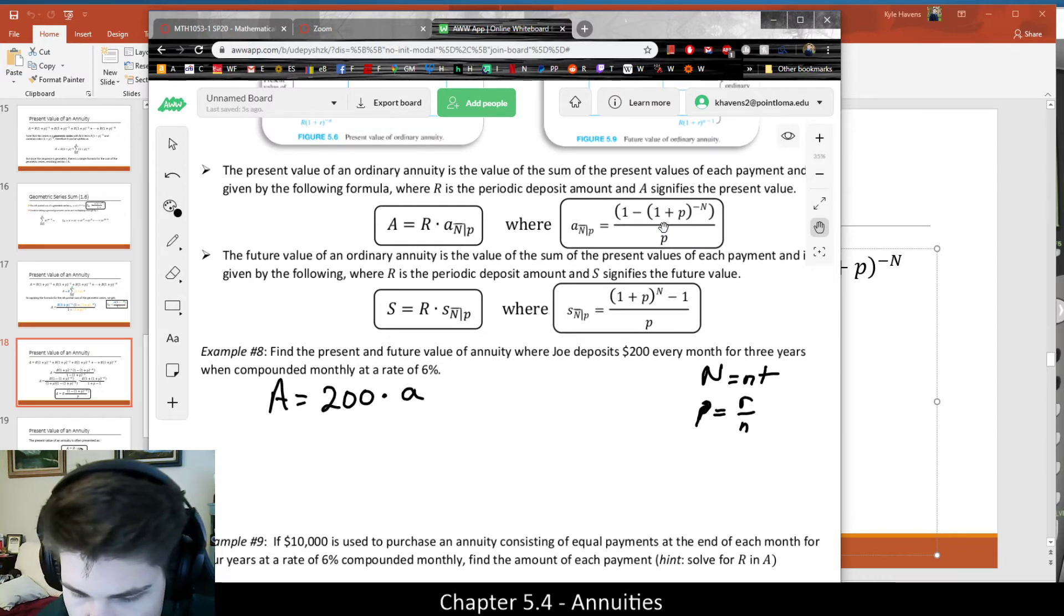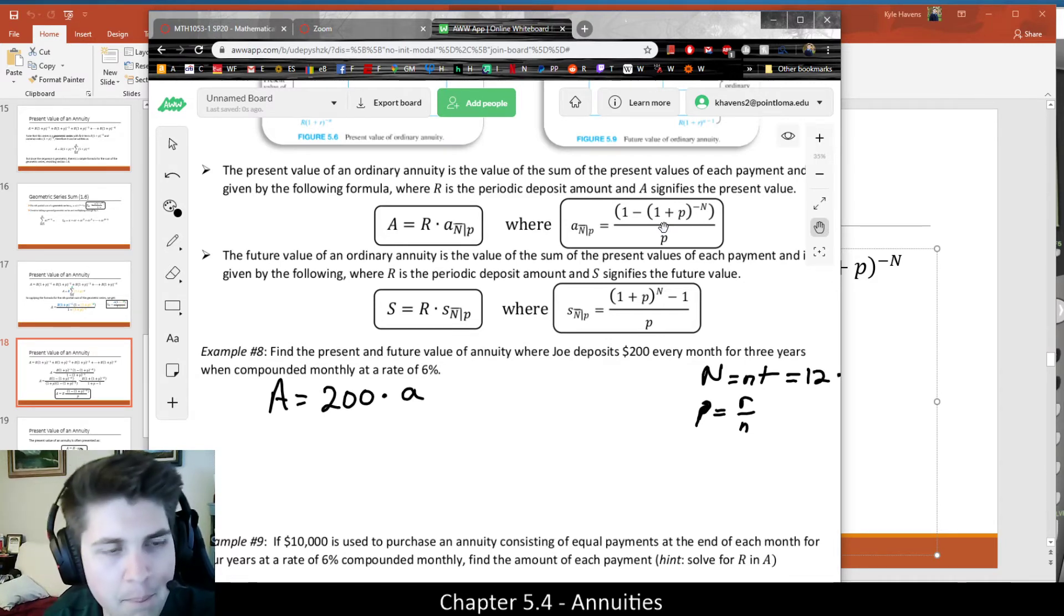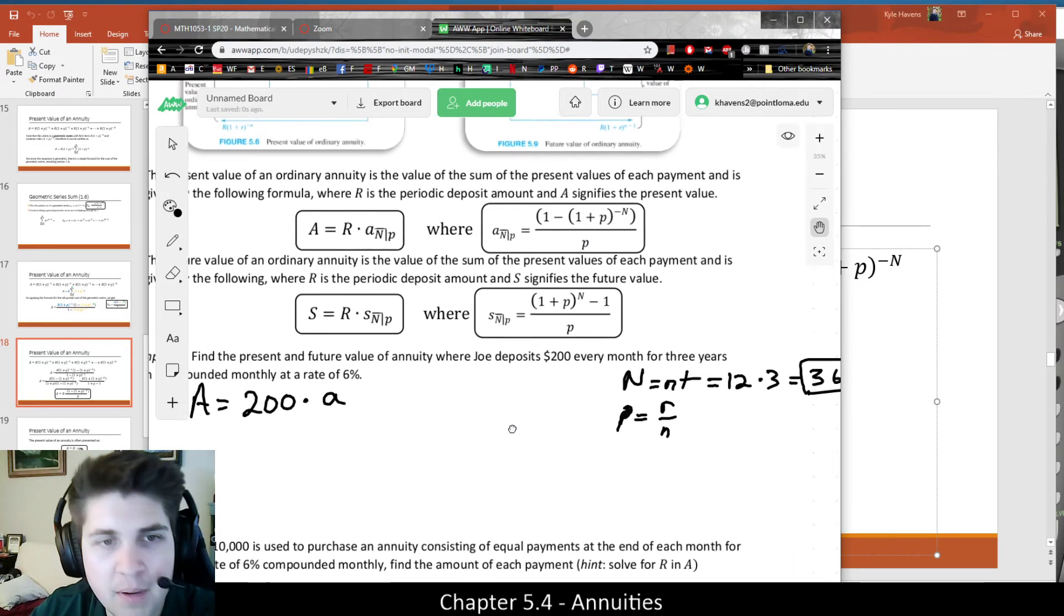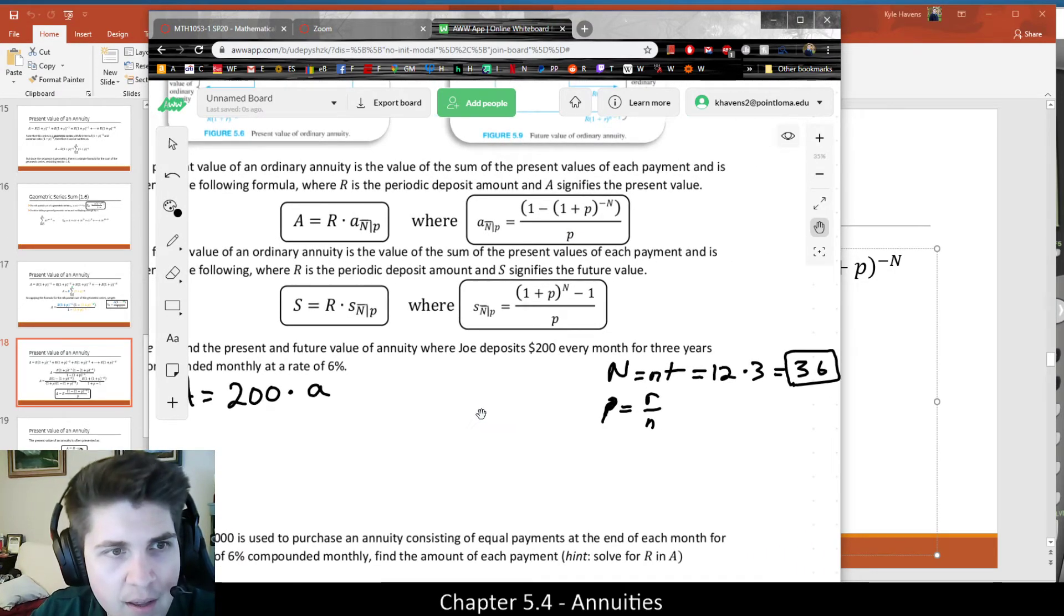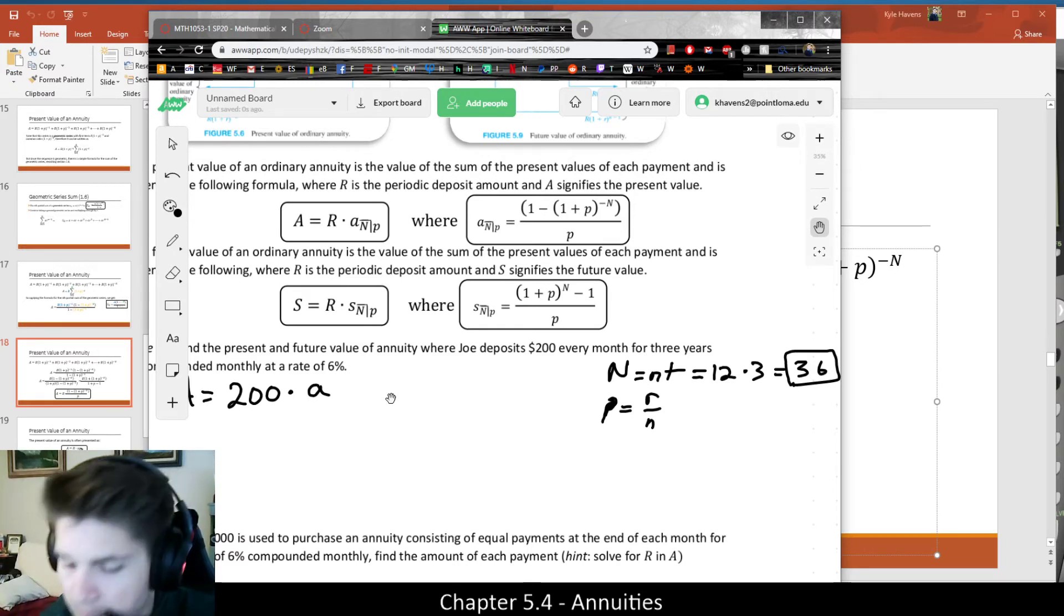So in our case, it's compounded monthly, so little n is 12. And t is three years, so that's three. So basically, capital N would be 36, and that's just how many payment periods we'd have for our annuity. Basically, it's going to be 36 payments of $200 in that. And then little p is the periodic interest rate.